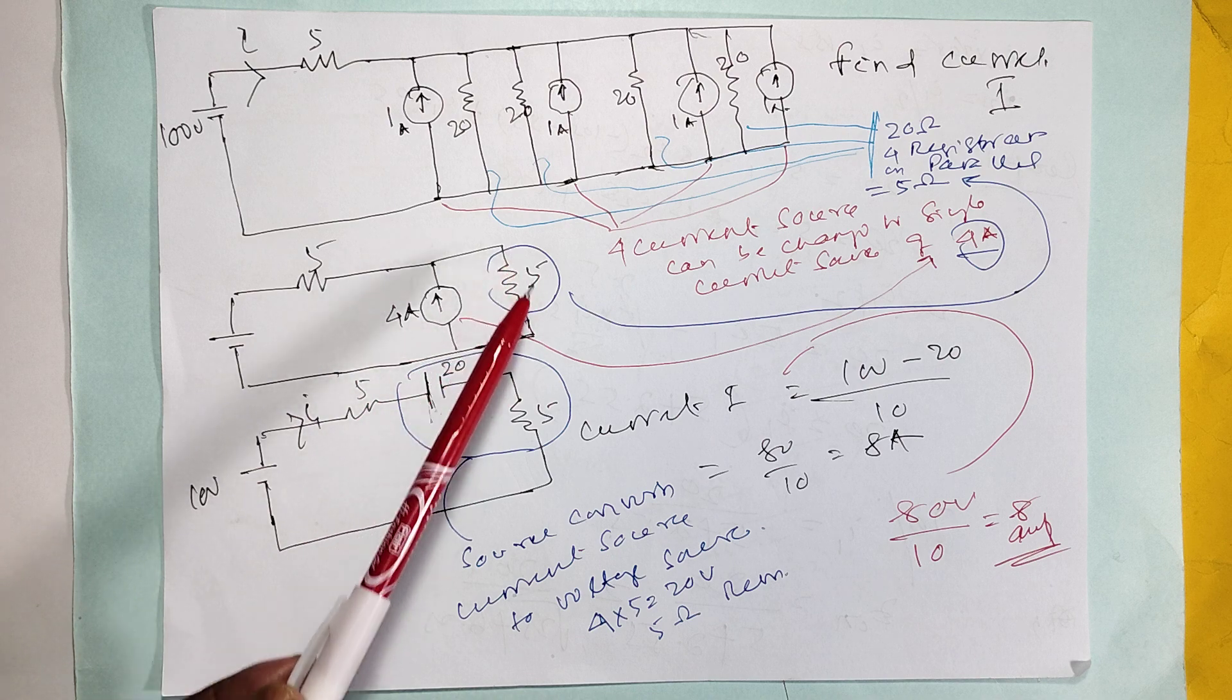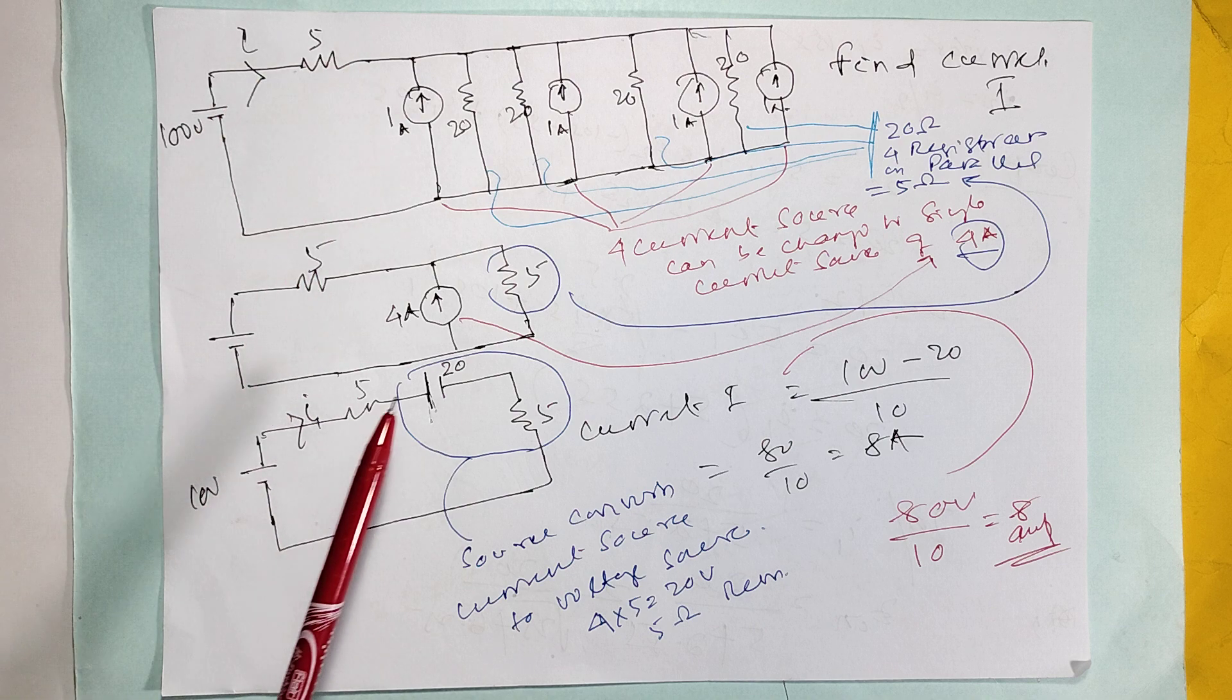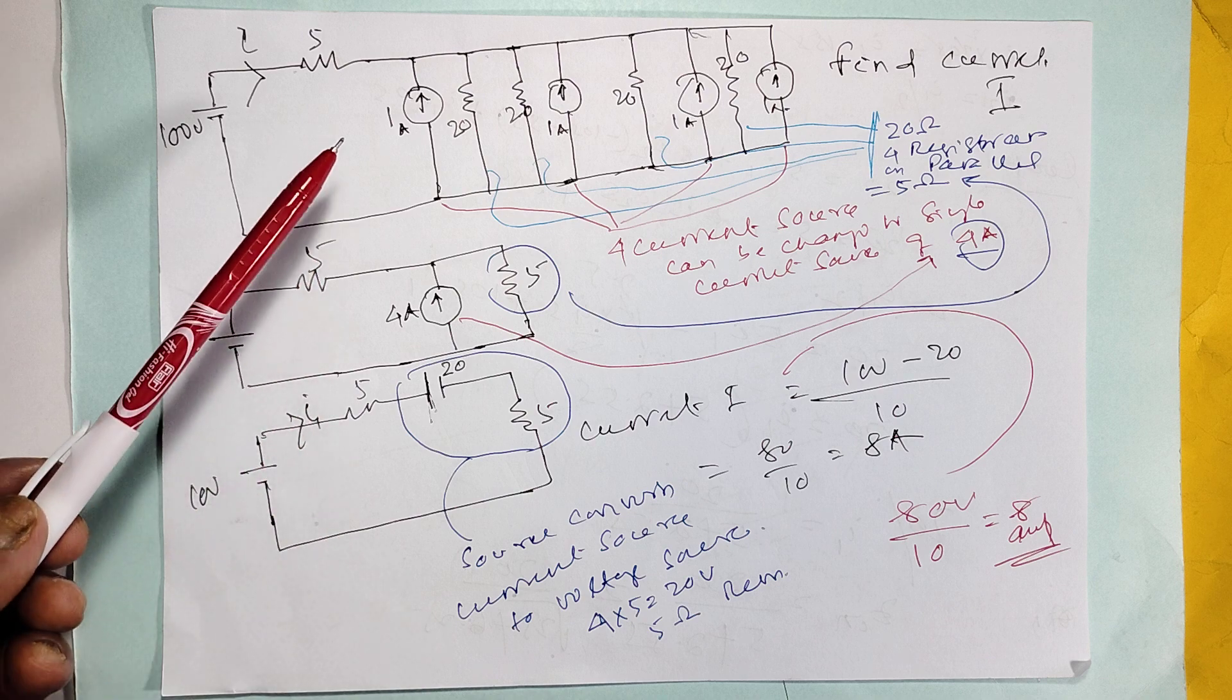And this 5 resistor is in series. The voltage balance is there: 100 minus 20 divided by 10 equals 8 ampere. The current, only you should know.